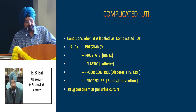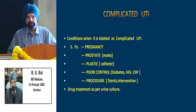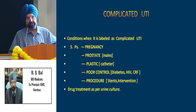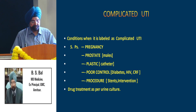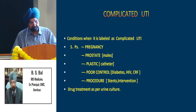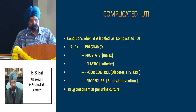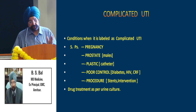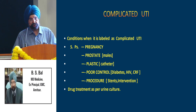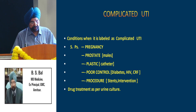Complicated UTI can be remembered with the formula of 5 P's: Pregnancy, Prostate or males, Plastic or catheter-associated UTI, Poor control of conditions like diabetes, HIV or renal failure, and certain Procedures like stents or intervention. UTI in these conditions should be taken seriously and drug treatment should be based on the culture report.